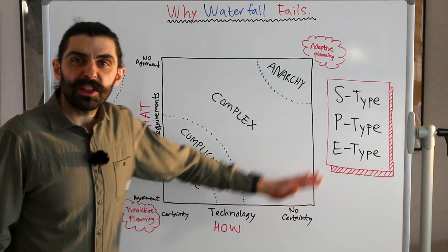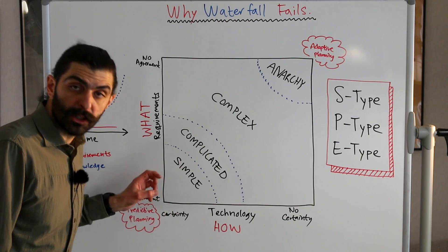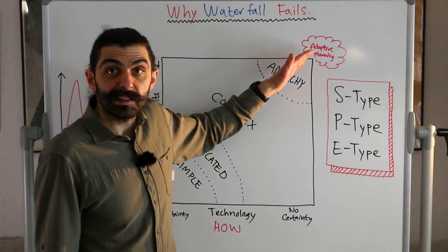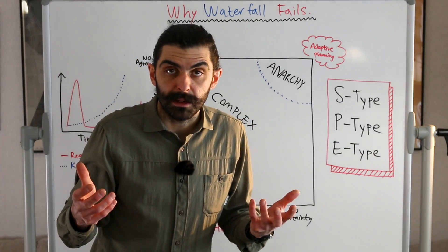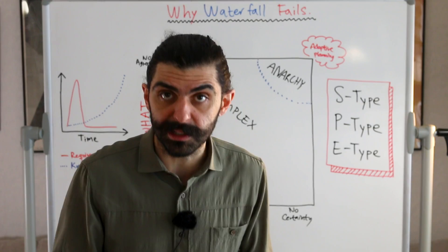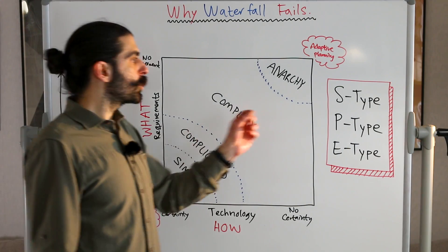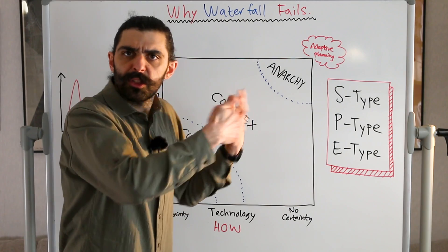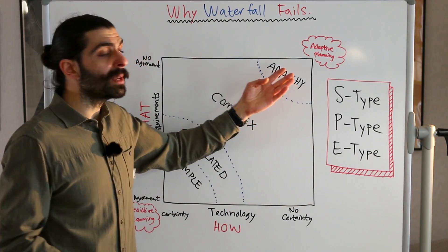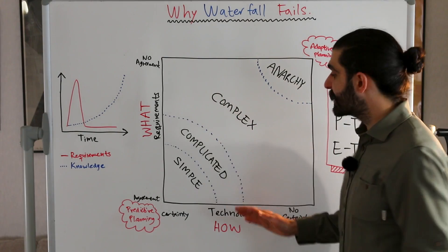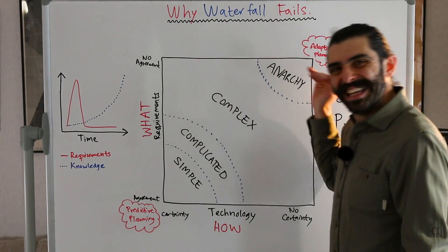As you move from the bottom left towards the top right, you move from certainty in technology and agreement in requirements towards uncertainty in technology and disagreement in requirements. In the bottom left corner you can use predictive planning, because you know how you're going to build it and what you're going to build. But as you move upwards, you have to move away from predictive planning and towards adaptive planning, because you have to adapt to things you discover along the way. This space is divided into four zones: the simple zone, the complicated zone, the complex zone, and the anarchy zone.